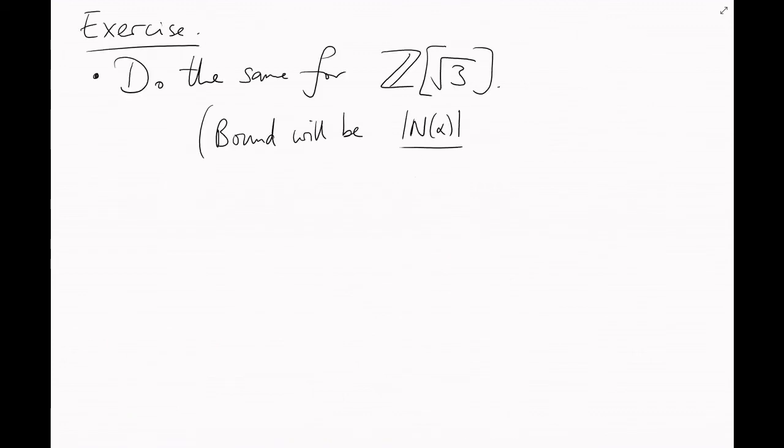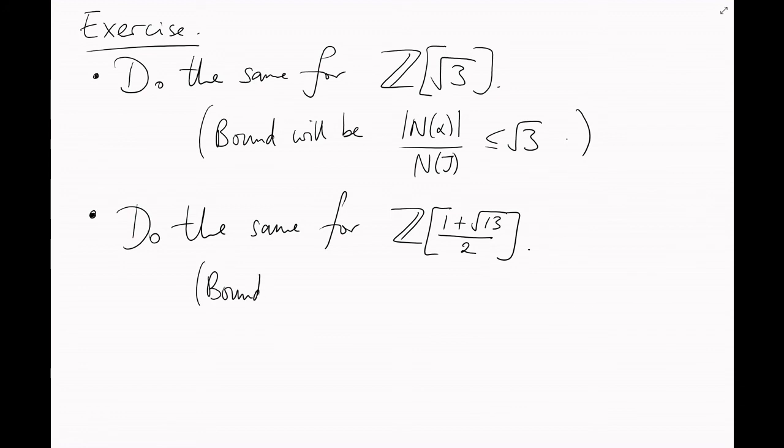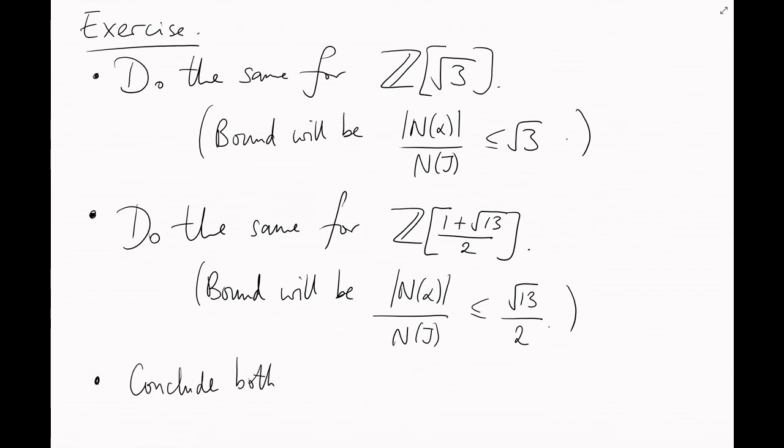Okay, here's an exercise. Do the same thing for Z adjoin root 3. You'll end up with a bound of root 3. Do the same thing for Z adjoin 1 plus root 13 over 2. You'll end up with a bound of root 13 over 2. You should be able to conclude immediately that both of these rings have unique factorization, because both of these bounds are strictly less than 2.